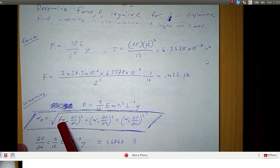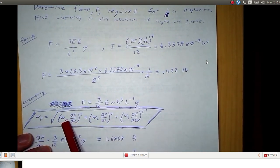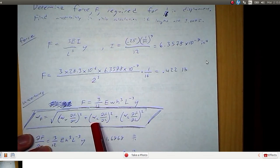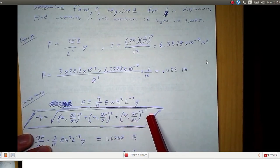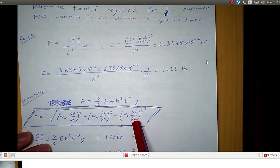Well, our uncertainty in our force is given by the square root of the sum of the squares of the contributions of each of the uncertainties. So we have the uncertainty in the width. So we're going to square the product of the uncertainty of the width and the partial derivative of the force with respect to the width. Add to that the square of the product of the uncertainty of the height and the partial derivative of the force with respect to height. And then the square of the product of the uncertainty in length and the partial derivative of force with respect to length.